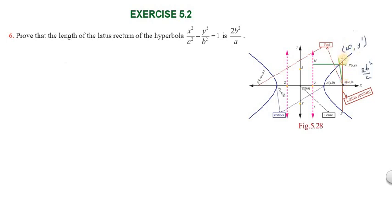If we find the point on the curve, it definitely lies at x = ae. So we substitute x = ae into the equation. The hyperbola equation is x²/a² - y²/b² = 1. Substituting x = ae, we get a²e²/a² - y²/b² = 1.